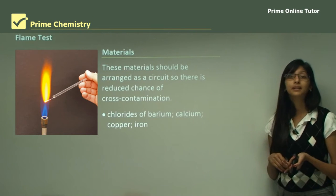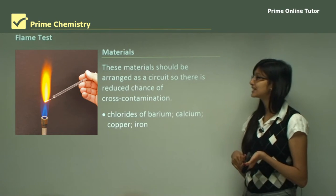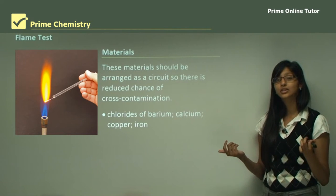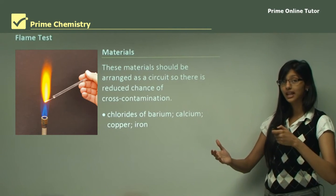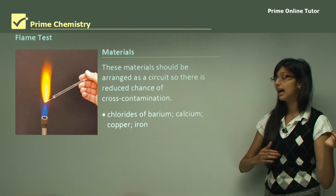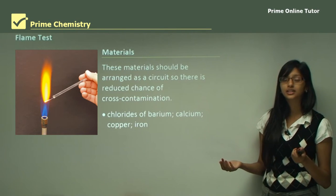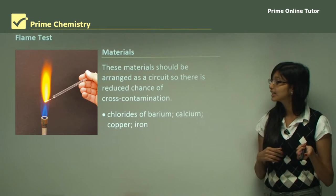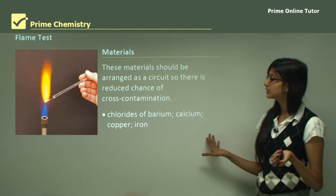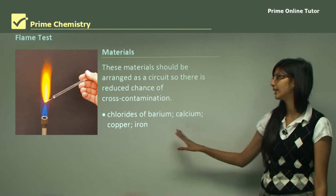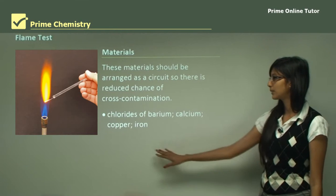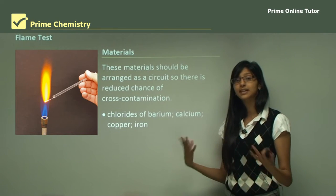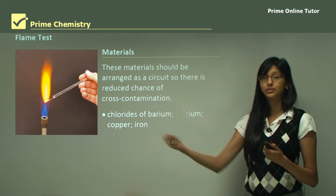Now, what materials do we use in this investigation? The materials should be arranged carefully to ensure there is no cross-contamination and to avoid impurities in your sample, ensuring accurate results. The materials you will use are chlorides of barium, calcium, copper, and iron, because these are some of the cations that produce specific colors when put into the flame.